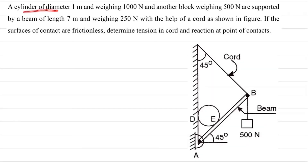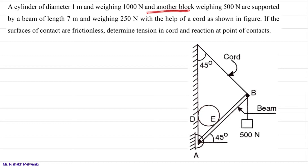A cylinder of diameter 1 meter is given. This cylinder has a diameter of 1 meter and weighs 1000 Newton, so W acts at the center. Another block weighing 500 Newton is supported by a beam AB of 7 meter length, weighing 250 Newton.